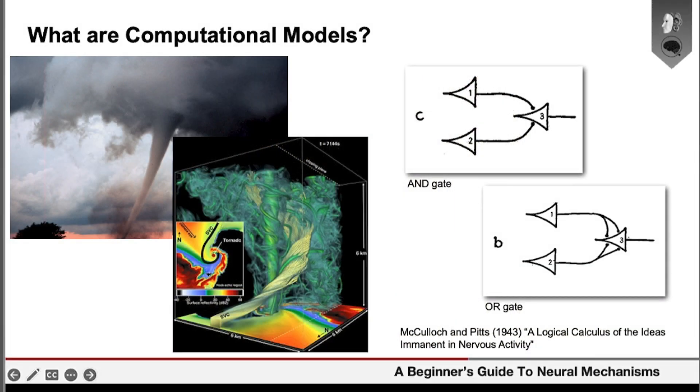This part of the lecture is about computational models and how they figure in explanations in neuroscience. So firstly, we need to say a bit about what computational models are.